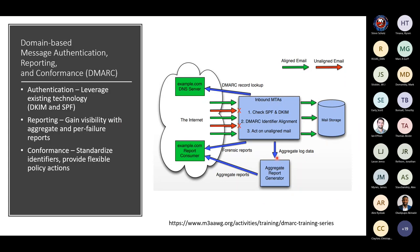Most servers that receive a message and support DMARC will log every single message and send you a daily aggregate report. By default, this daily report comes back telling you which messages are passing DMARC, which are failing, and what's passing and failing SPF and DKIM as well. There's also a forensic report, which is essentially a bounce-back in MARF format that sends every individual failing message back to you.